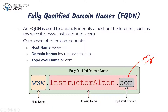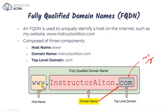The domain name itself that you register is the center part — in my case, instructoralton. When registering, you check if that domain name is available for your chosen top-level domain, such as .com, .net, or .org. The host name part is where subdomains come into play. For example, www tells us this is associated with a website, but it doesn't have to be www — you could have mail.instructoralton.com, file.instructoralton.com, and so on.